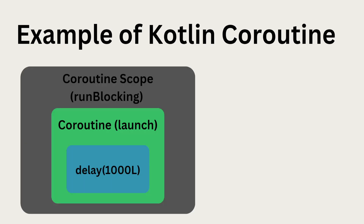In more detail, runBlocking blocks the current thread until all the coroutines inside it complete. launch is used to start a new coroutine, and delay is a non-blocking delay. This combination allows you to write efficient and simple code that runs multiple tasks at the same time.